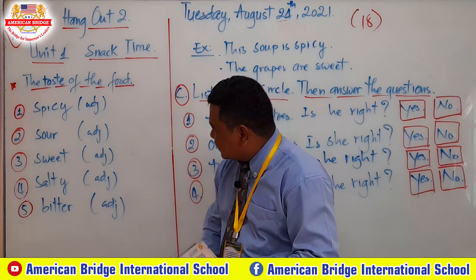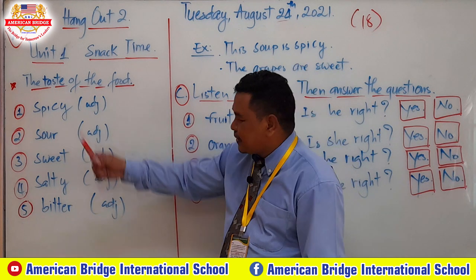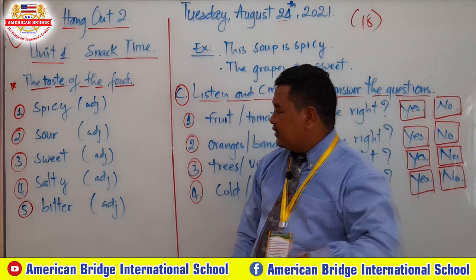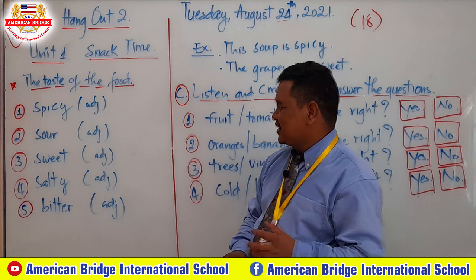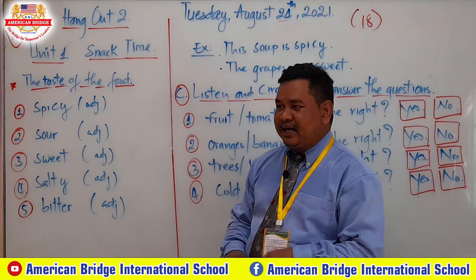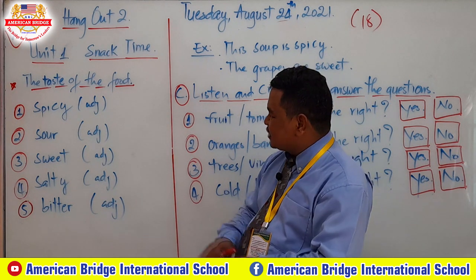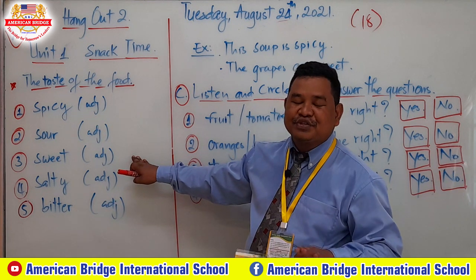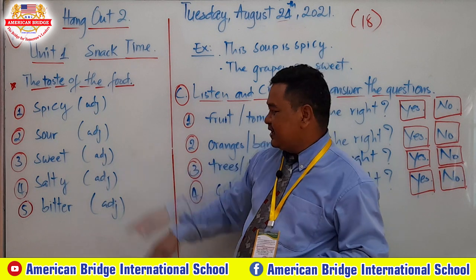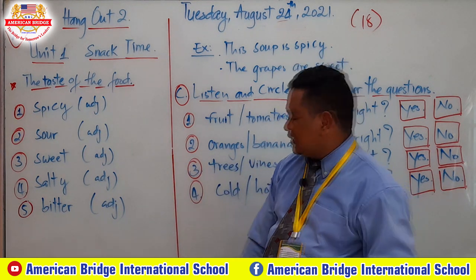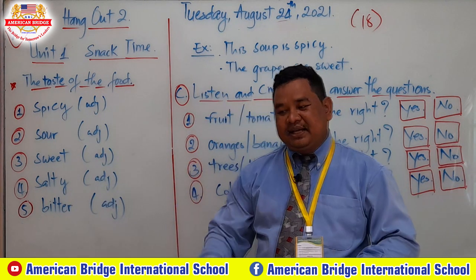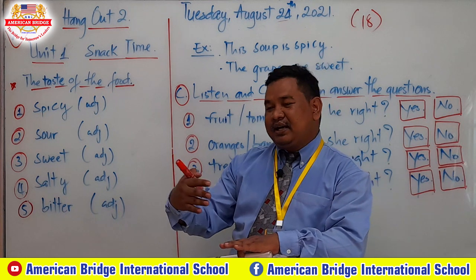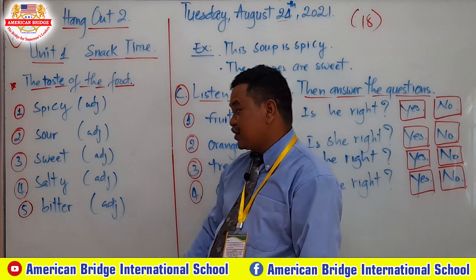Students, can you see right now? This is the taste of food. The first word is spicy — it's an adjective — for example: this soup is spicy. You know sauce, like a spicy sauce. Sweet is based on things like candy, ice cream, or banana — banana is sweet, watermelon is also sweet. Salty — when you put a lot of salt, the food is salty. You can put a little bit so it's not too salty.